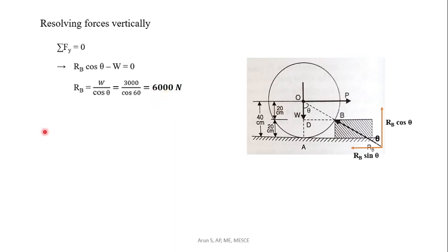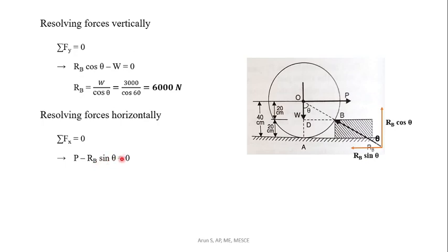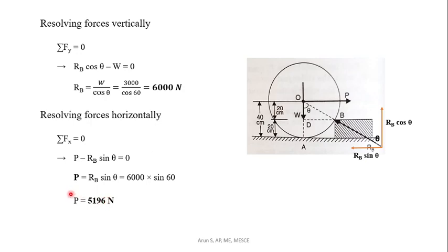Now applying the second equilibrium condition sigma Fx equals zero for horizontal forces, we get P minus RB sin theta equals zero. With theta equal to 60 degrees, we can find out that P equals 5196 Newton. The force required to pull the roller over the block is 5196 Newton. That is the answer to the first part.